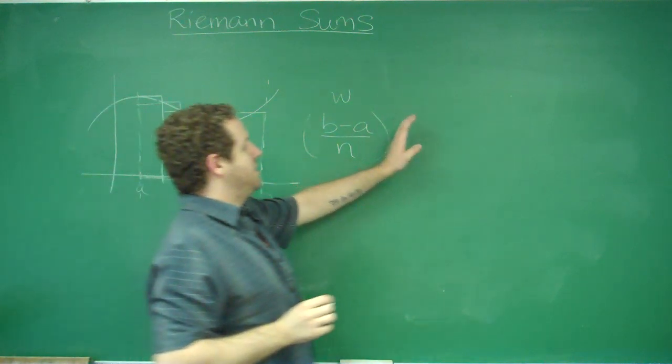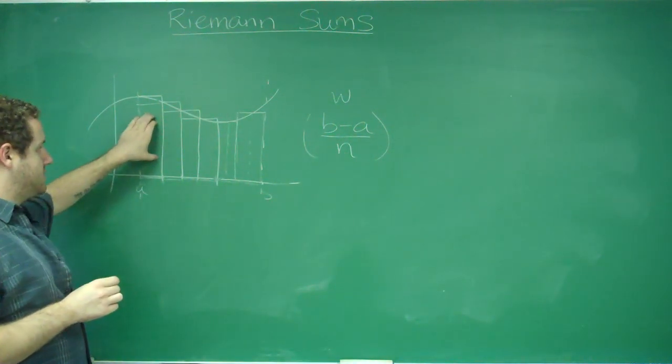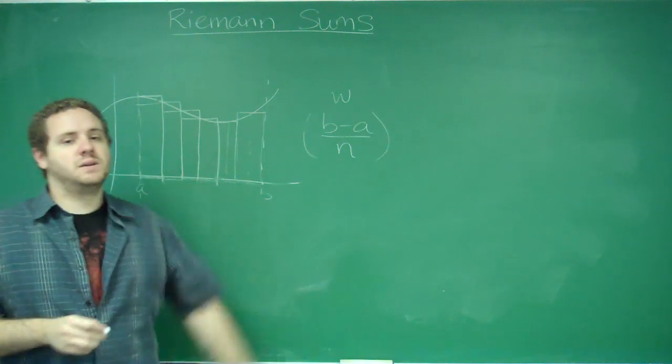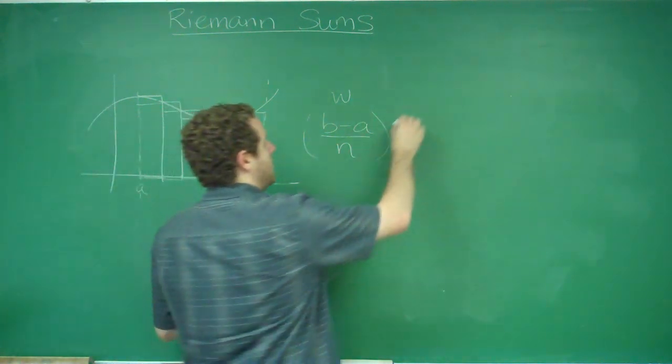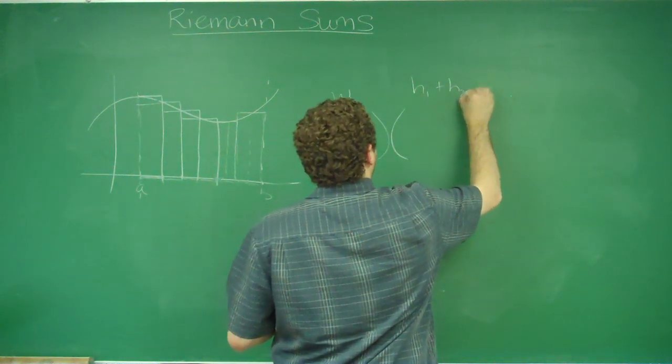So this right here is the width of the rectangles. So if you multiply this by the sum of all of their heights, that would be the area of this, plus the area of this, plus the area of this. And if you added them all up, you'd get your area.